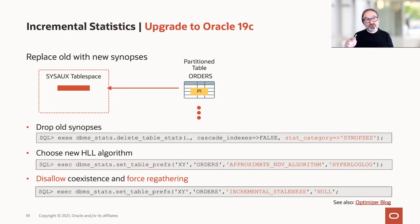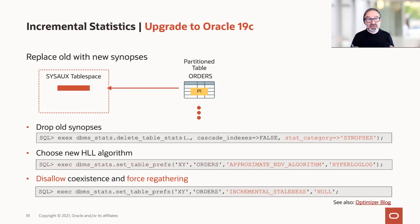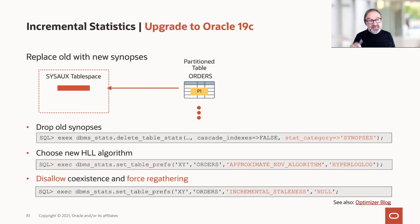What you need to do: first, drop the old synopsis. Call DBMS_STATS, DELETE_TABLE_STATS with stat category 'synopsis' — don't delete all your stats, just the synopsis. Then choose the HyperLogLog algorithm as standard using SET_TABLE_PREFS with APPROXIMATE_NDV_ALGORITHM set to HyperLogLog. Now HyperLogLog is turned on. Then disallow the coexistence of old and new, and force a regathering by setting the table prefs INCREMENTAL_STALENESS to null.